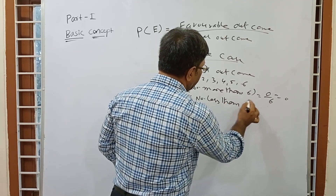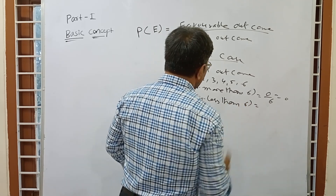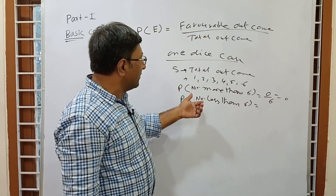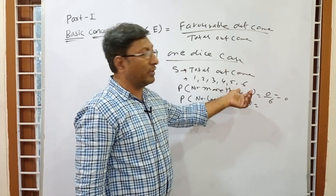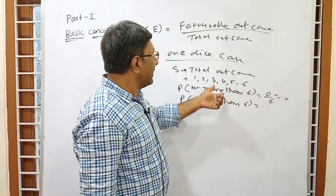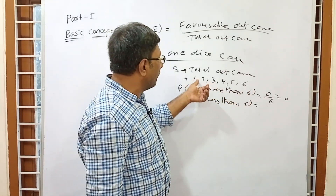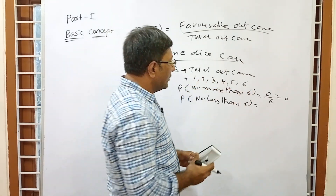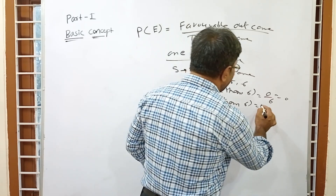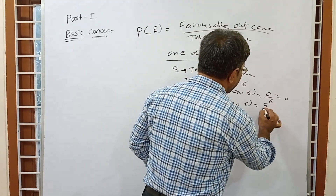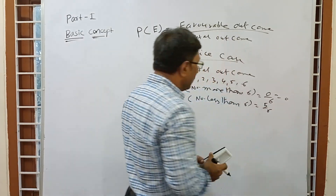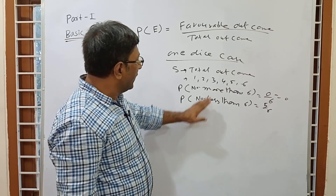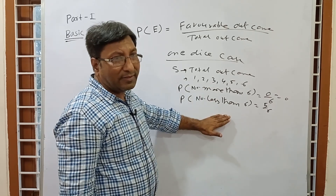Probability of a number less than 6 — how many numbers are less than 6 in the total outcome? They are 1, 2, 3, 4, 5 — that is 5 numbers. Correct answer: 5/6.